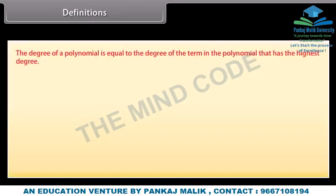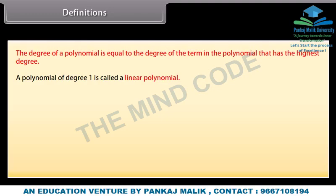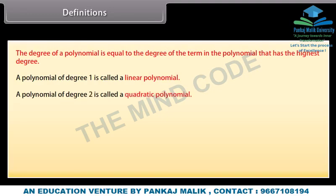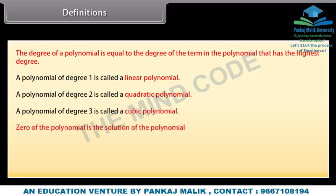The degree of a polynomial is equal to the degree of the term in the polynomial that has the highest degree. A polynomial of degree 1 is called a linear polynomial. A polynomial of degree 2 is called a quadratic polynomial. A polynomial of degree 3 is called a cubic polynomial. The zero of the polynomial is the solution of the polynomial.